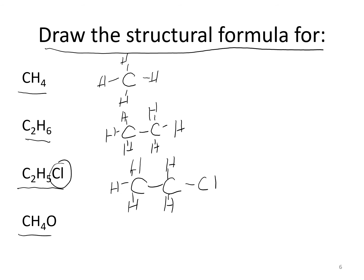For CH₃OH: carbon is placed in the center, attached to an oxygen, and surrounded by hydrogens. The carbon has three hydrogens attached; oxygen forms two bonds, so it's attached to a hydrogen as well. Carbon ends up with four bonds and oxygen with two bonds — all bonding rules are satisfied.